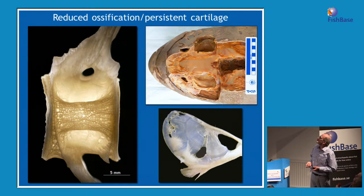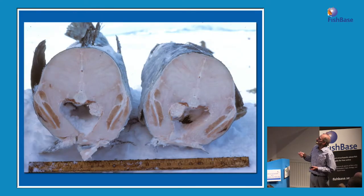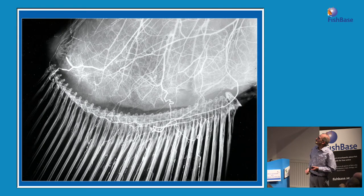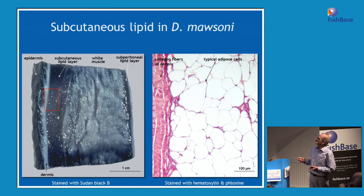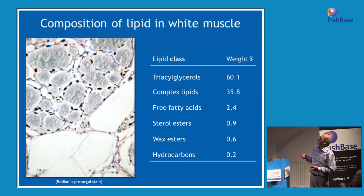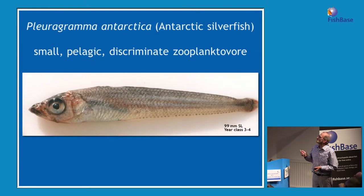Antarctic toothfish have a very light skeleton with a lot of cartilage in the skull and girdle, and the bone is very cancellous and not dense. They swim with their pectoral fins — red muscle is confined to them — they're very energy efficient, stroking their way through the water. There's an incredibly good blood supply to the white muscle, a tremendous amount of fat beneath the skin, and about 10% of the body weight is fat, all triacylglycerols.